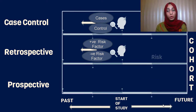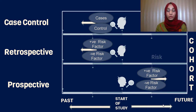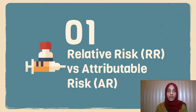In a prospective cohort study, we also start with the risk. We take two groups: one which is exposed to the risk factor and one which is not exposed to the risk factor. We follow them into the future to find out if that risk was associated with the outcome. For more information, check out the MedEDIA YouTube channel to learn more about study designs.